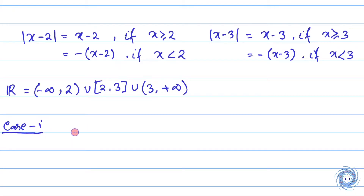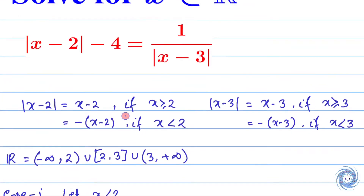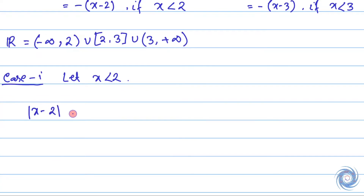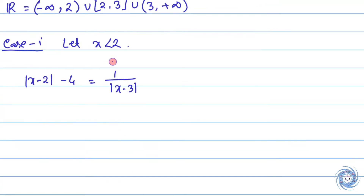Now let us assume that x < 2. Let us write down the given equation. Since x < 2, therefore x - 2 is a negative number and also x - 3 is a negative number. So from here we have...